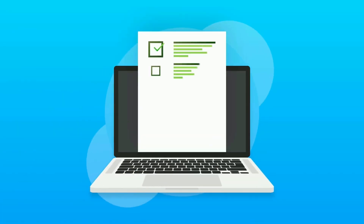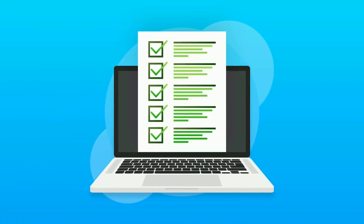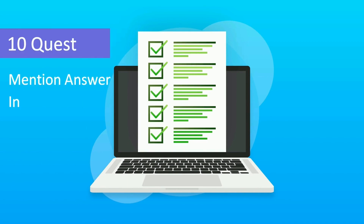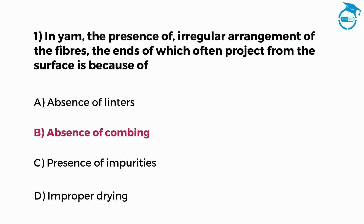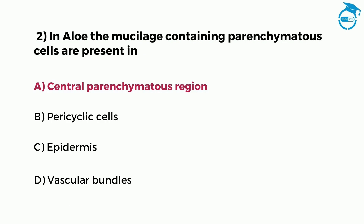Here is the process. This test consists of 10 questions and you will get 7 seconds to write your answer in the comments. For example, if the answer to question 1 is option B, you can write it in the comments as 1B. Similarly, if the answer to question 2 is option A, you can write it in the comments as 2A.